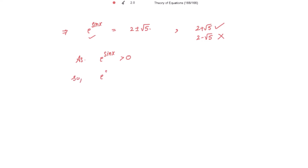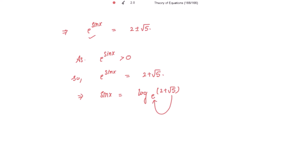So e to the power sin x equals 2 plus square root of 5, which means sin x equals log of (2 plus square root of 5) to the base e. Now, 2 plus square root of 5 is approximately 4.236, and the value of e is 2.718. Since 2 plus square root of 5 is strictly greater than e, the natural log of (2 plus square root of 5) is strictly greater than 1.